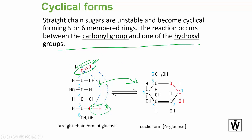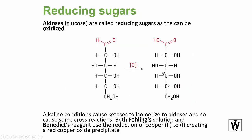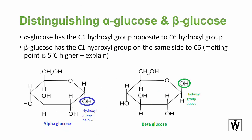Monosaccharides are five or six membered cyclical structures. The Haworth projection is the picture you'll get - they stick to this particular form. That's how you'll know whether to call the group up or down, because you need to know the difference between the two. Aldehyde sugars can be oxidised further to carboxylic acid, so you can get a colour change to detect and tell the difference between those two.